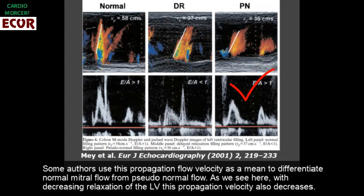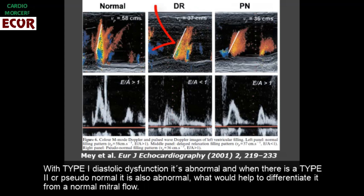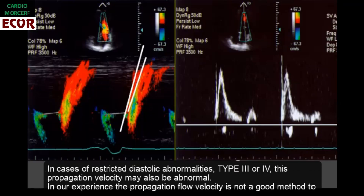As we see here, with decreasing relaxation of the left ventricle, this propagation velocity also decreases. With type 1 diastolic dysfunction it is abnormal, and when there is a type 2 or pseudonormal pattern it is also abnormal. What would help to differentiate it from a normal mitral flow? In cases of restricted diastolic abnormalities, type 3 or 4, this propagation velocity may also be abnormal.